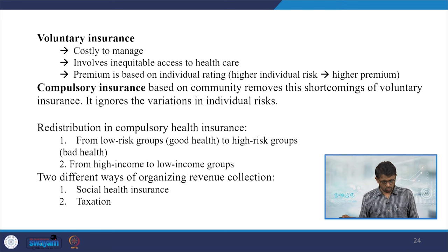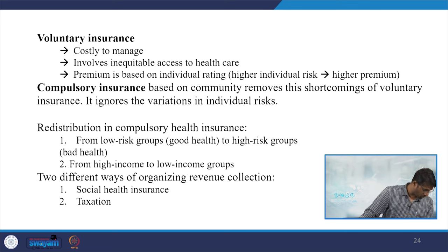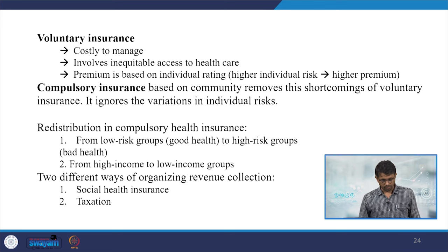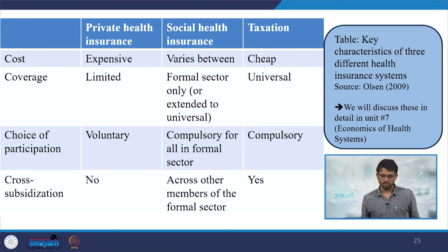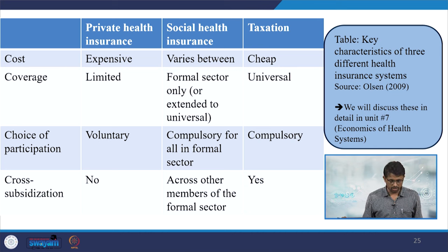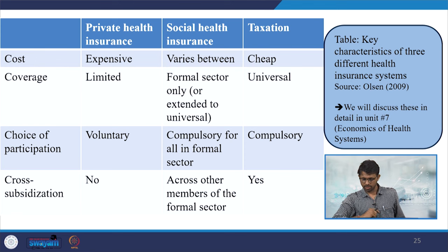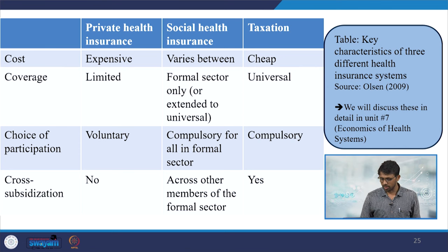There are two different ways of organizing revenue collections in insurance — discussed further in unit 7 on social health insurance, taxation, and related topics. Three categories can be compared using different indicators: private health insurance, social insurance, and taxation-based provisions, using characteristics from Olsen's 2009 work.